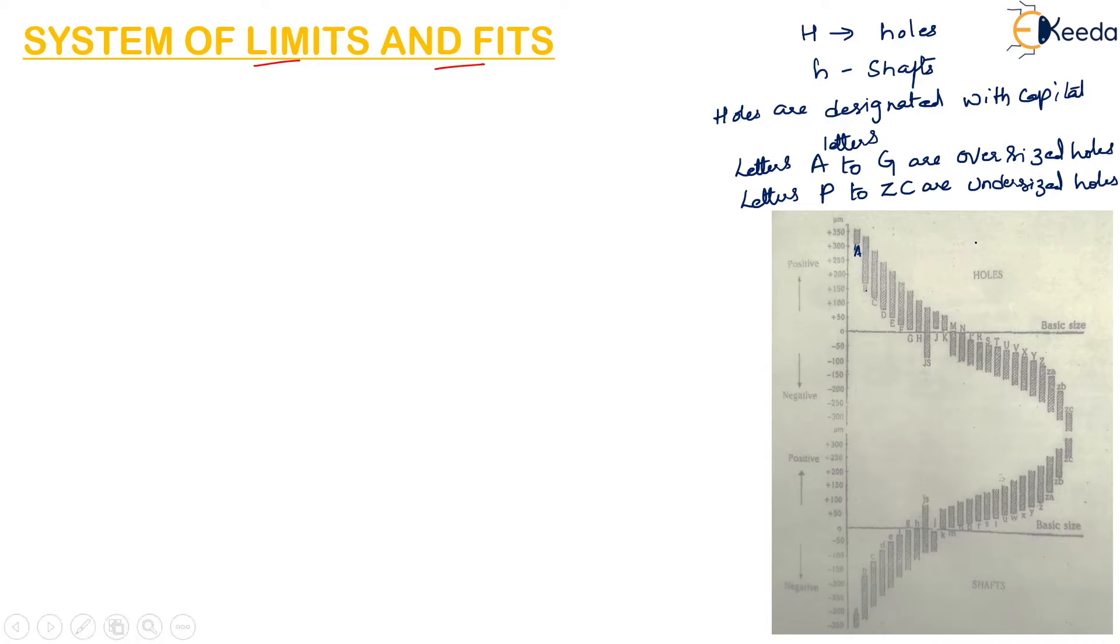The same way, shafts are designated with small letters. Small m to small zc are oversized, and the letters small a to small g are undersized shafts.